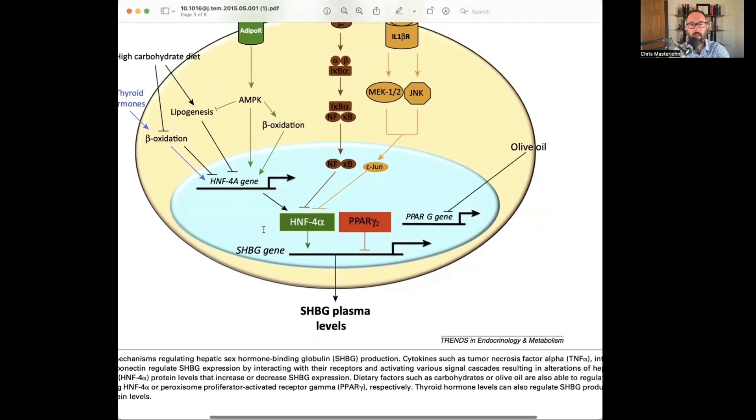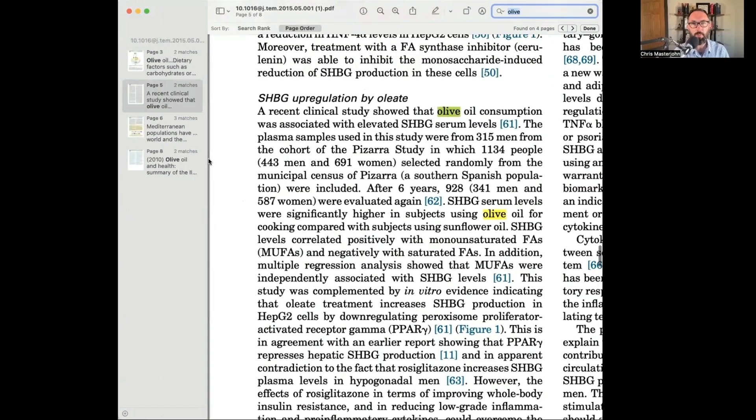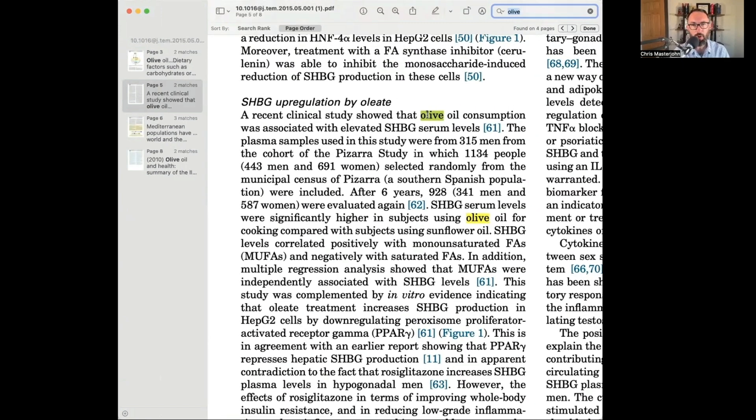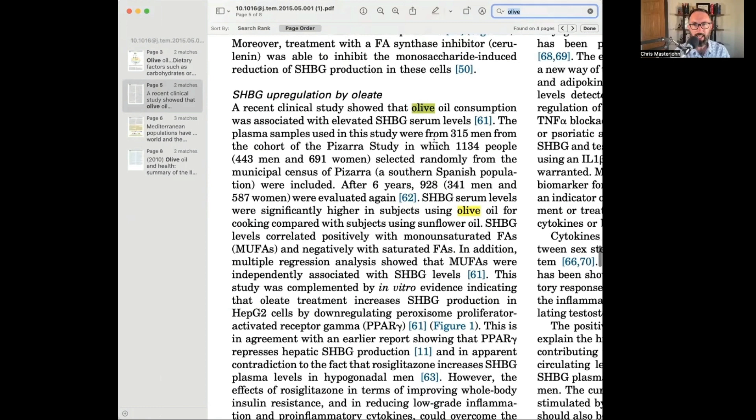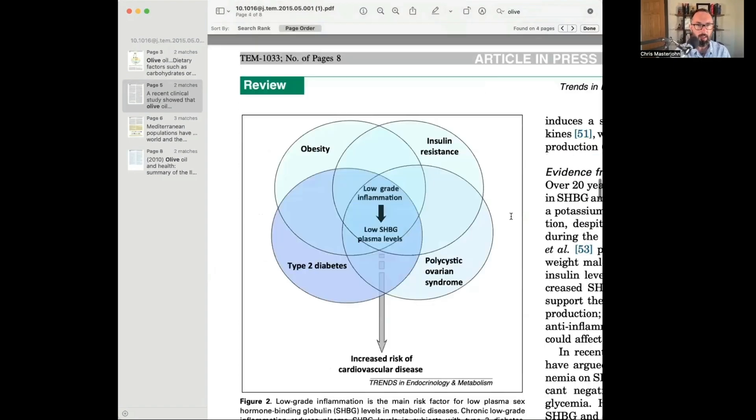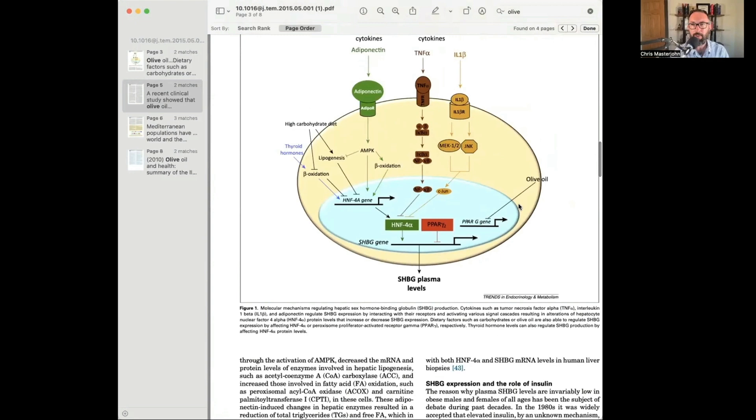If you go into the text of this, this is a bad inference. They're drawing this from olive oil consumption was associated with elevated SHBG serum levels. That came from significantly higher in subjects using olive oil for cooking compared with subjects using sunflower oil. Well, that makes me question these authors' understanding of the background information because PUFA activate PPAR transcription factors. And so this is not an effect of olive oil. This is an effect of PUFA. And so they're saying that olive oil increases it. What this should say is that high PUFA vegetable oils decrease it.